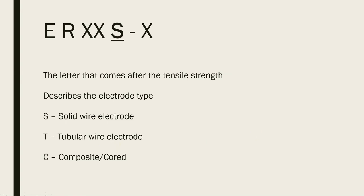Now let's talk about the S. The S that comes after the tensile strength is telling you what kind of electrode wire this is. When we're using gas metal arc welding, it's always going to be a solid wire, so S stands for solid. If you were to see something like T or C, it's still a welding electrode but for a completely different process. For example, T would let you know that this is for flux core. So in gas metal arc welding, we should be looking for the letter S.